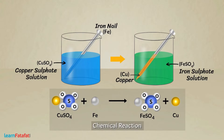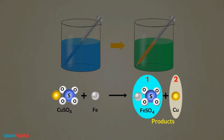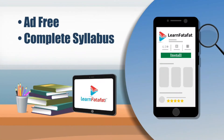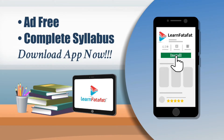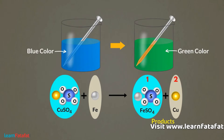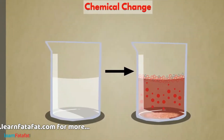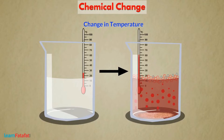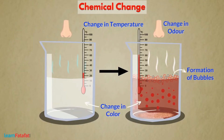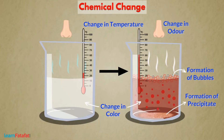How can we identify if a change is chemical or physical? We can identify a chemical change with some observations. During a chemical reaction, one or more new substances or products are formed. They have different composition as well as different properties compared to the reactants. In addition to change in composition, a chemical change may also involve change in temperature, colour, odour, formation of bubbles, or formation of a solid material, i.e. a precipitate. The change is permanent and cannot be reversed.